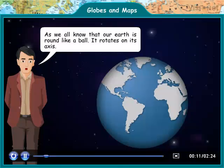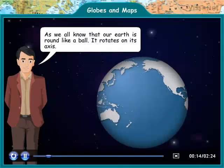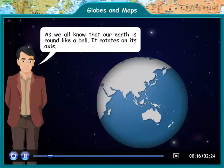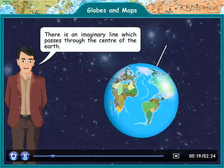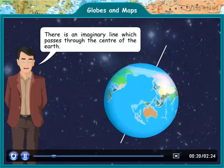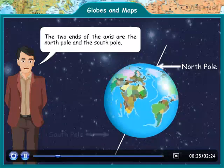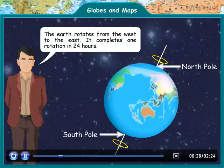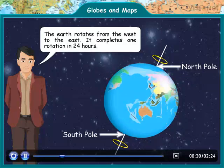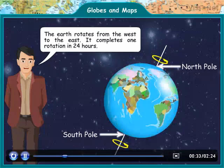As we all know, our Earth is round like a ball. It rotates on its axis. There is an imaginary line which passes through the center of the Earth. The two ends of the axis are the North Pole and the South Pole. The Earth rotates from the West to the East, and it completes one rotation in 24 hours.